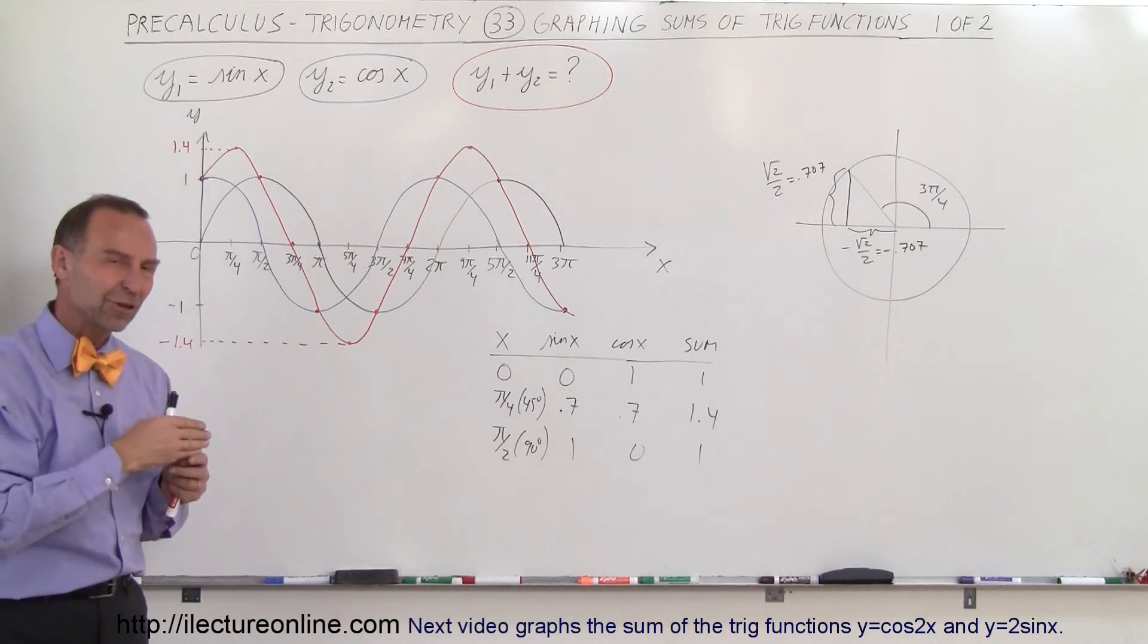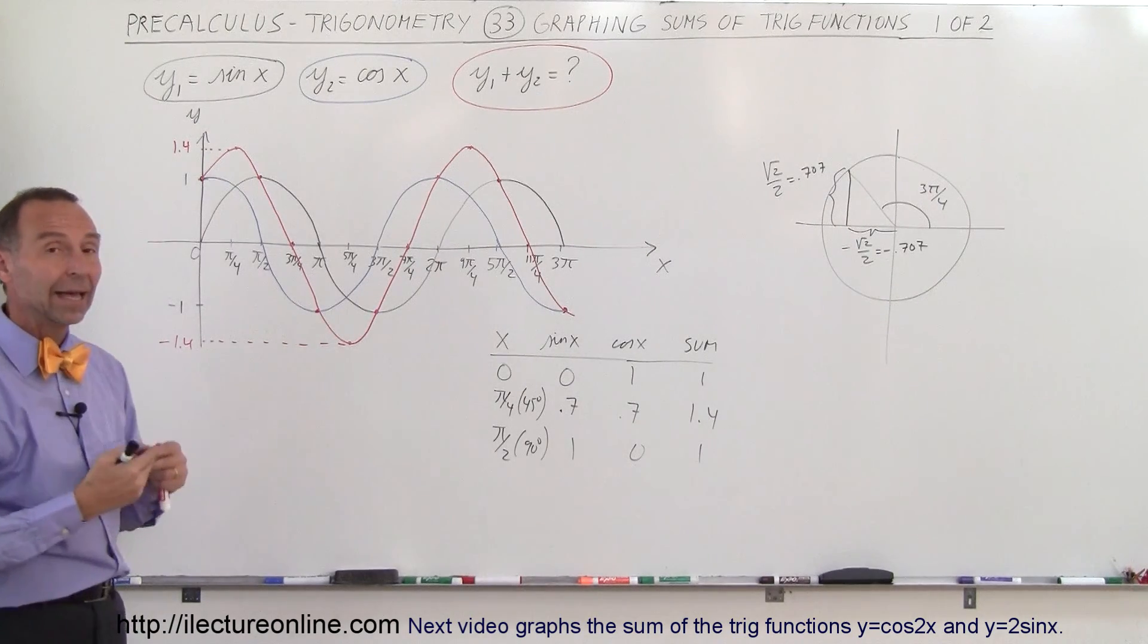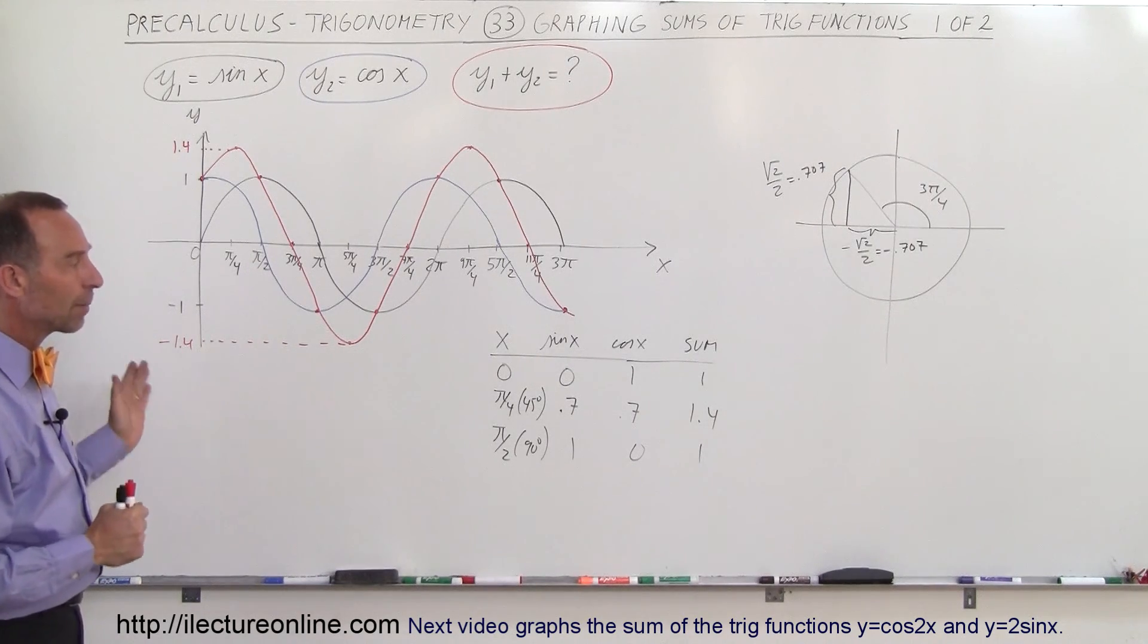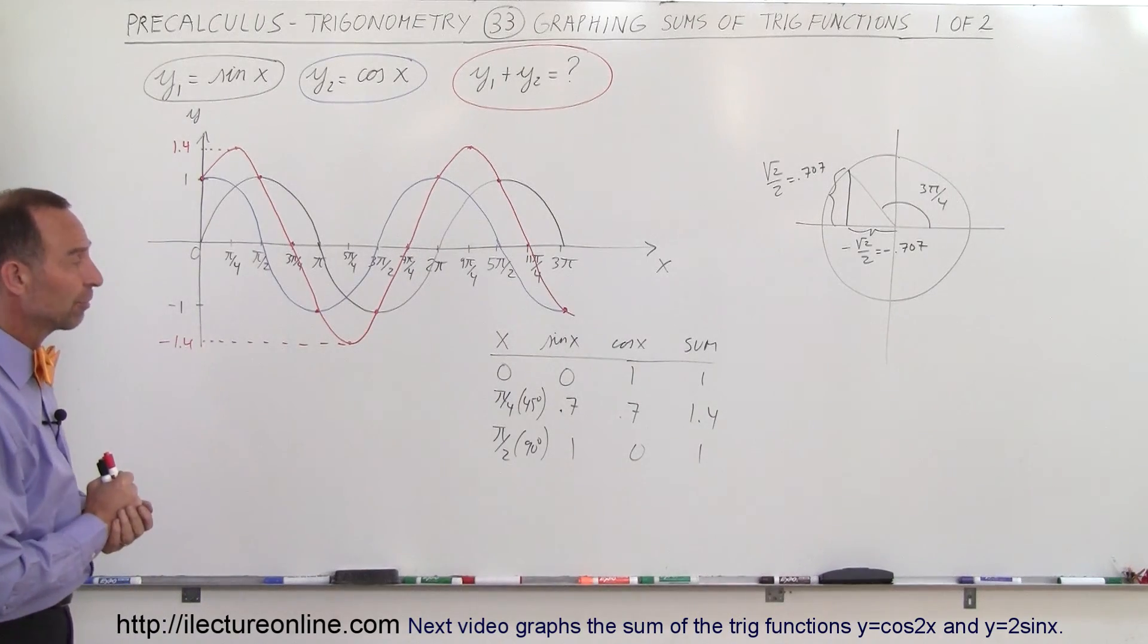So that was a simple example. On the next video, I'll do a little bit more complicated example with a different value for k and a different value for the angle. And you'll see that things are a little bit more complicated, but you can follow the very same technique to sum up two trigonometric functions.